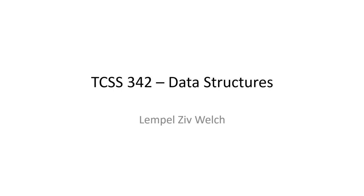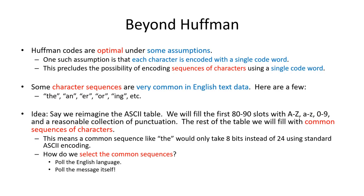Welcome. In this video I'd like to talk about the Lempel-Ziv-Welch data compression algorithm as a second alternative data compression algorithm to the Huffman algorithm that we looked at in a previous video. One of the benefits of the Huffman algorithm is that it gives us codes that are optimal given a couple of reasonable assumptions — but assumptions that we can violate, and that's going to be the principle we use today.